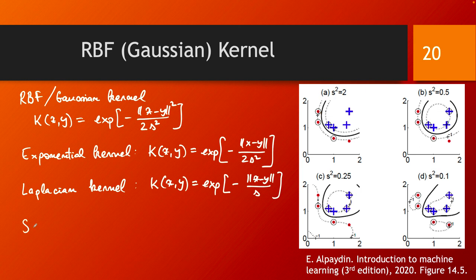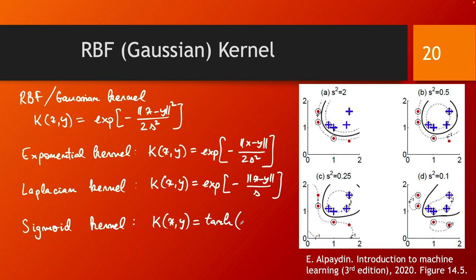Just one more variant of this Gaussian kernel is the so-called sigmoidal or sigmoid kernel. This has the form k of xy equals tanh applied to a times x transpose times y plus b, where a and b are parameters that should be found by the modelers through cross-validation.